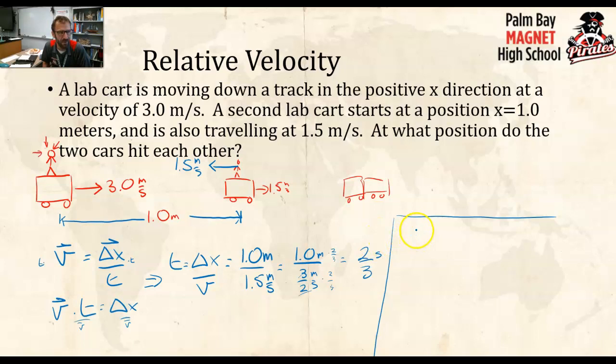Because velocity is equal to ΔX over T, I can rearrange this for ΔX. Multiply both sides by T, so that gives me, the T cancels out, ΔX is equal to the velocity multiplied by the time.